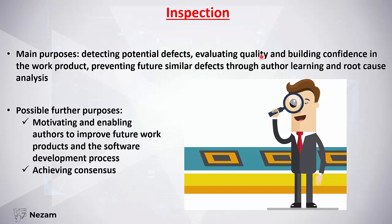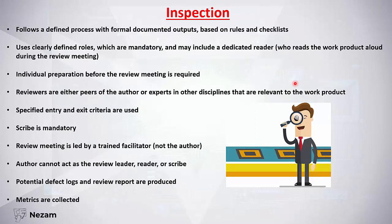The last and most formal review type is inspection. Its purpose is to detect potential defects, evaluate work product quality, prevent future similar defects through author learning and root cause analysis. Further purposes include motivating authors to improve future work products and achieving consensus. In inspection, we don't just find defects — we also search for root causes to drive process improvement. Everything must be done formally, following a defined process with formal documented outputs based on rules and checklists.